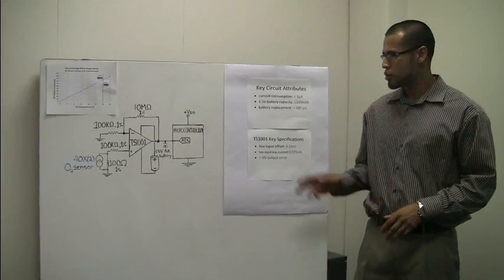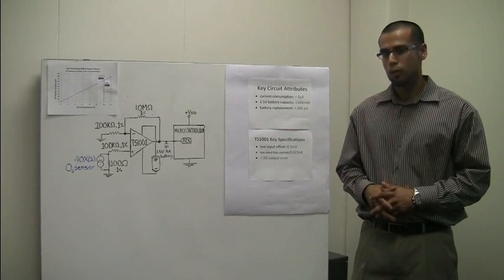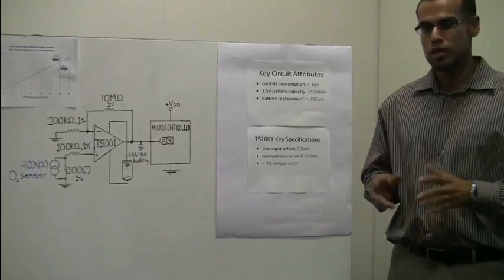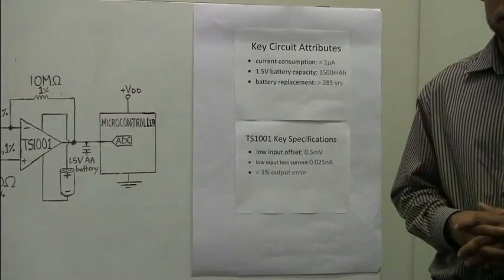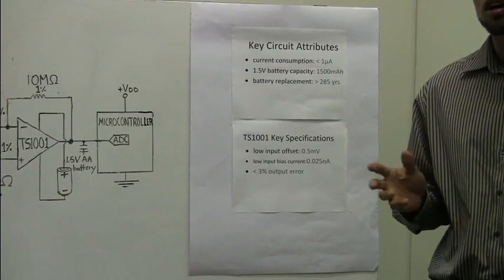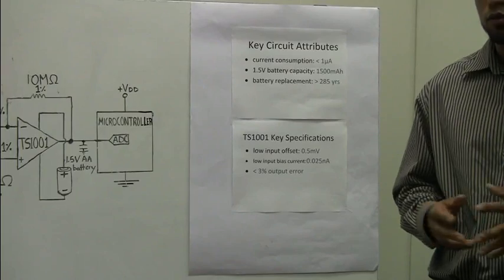The current consumption of the circuit is less than 1 microamp. A 1.5-volt AA battery is rated at 1500 milliamp hours, which means that it would take over 285 years before the battery needs to be replaced. In addition, the oxygen sensor would need to be replaced over 142 times before the battery needs replacement.